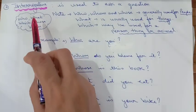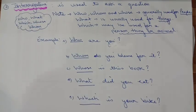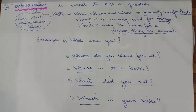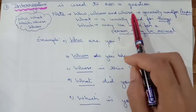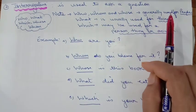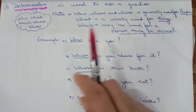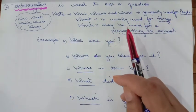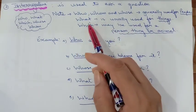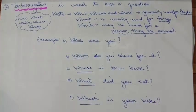Interrogative pronouns are used to ask a question. Who, what, which, whose, whom — these are all your interrogative words. You use them to ask a question. Kindly note: who, whom, and whose are generally used for people. 'What' is usually used for things — if you are asking about a thing, you will use 'what.' And 'which' may be used for a person, a thing, or an animal.